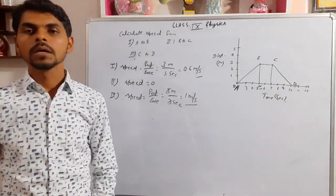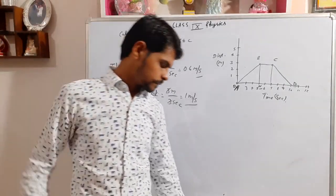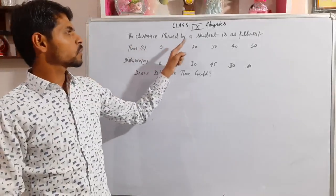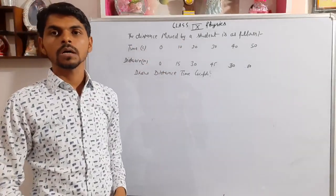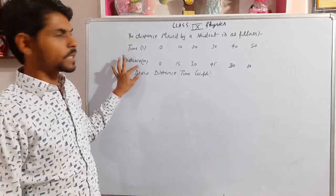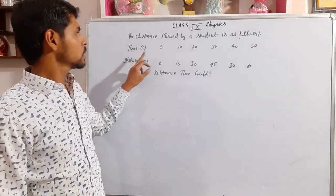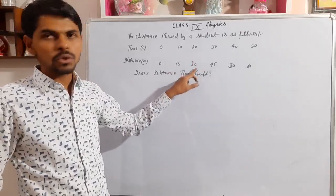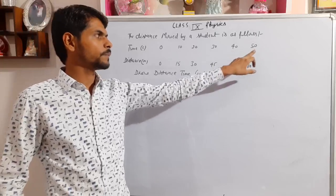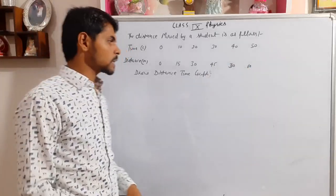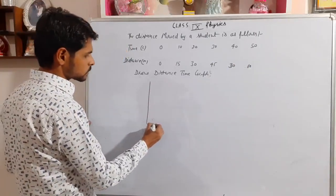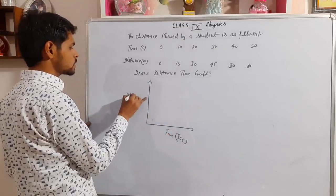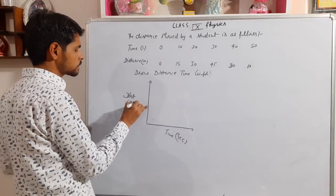That was the second numerical based on the distance-time graph. Now there is another type of question: the distance moved by a student is given as a table of time and distance. Time is in seconds and distance is in meters. At time 0, distance is 0; at 10 seconds, distance is 15 meters; at 20 seconds, 30 meters; at 30 seconds, 45 meters; at 40 seconds, 30 meters; at 50 seconds, 60 meters. We have to draw the distance-time graph.